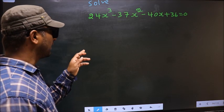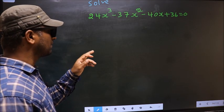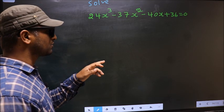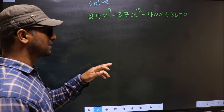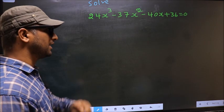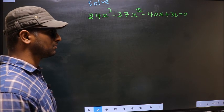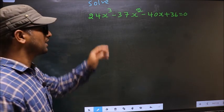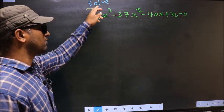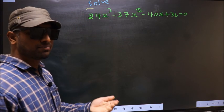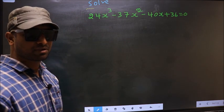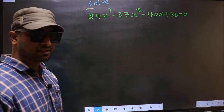Solve 24x³ minus 37x² minus 40x plus 36 equal to 0. Here they told us to solve, which means we should get the values of x.